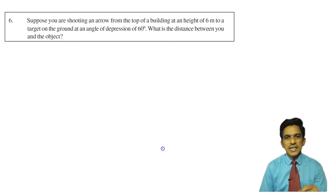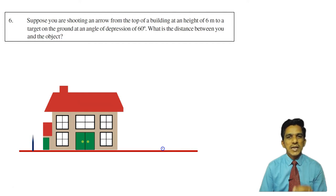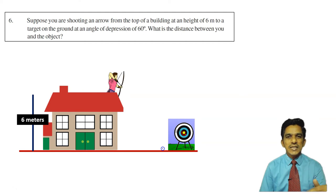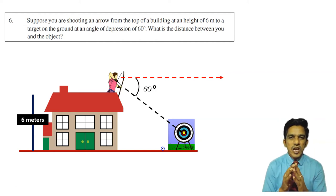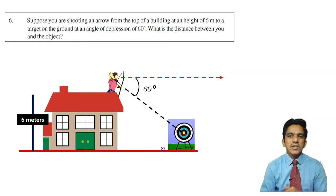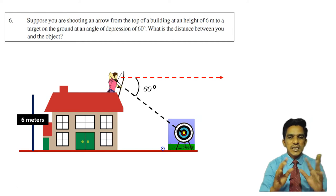Consider this is the building. Height of the building is 6 meters. This is the target and we are shooting the target from the top of the building. This is making an angle of 60 degrees with the horizontal line. Whenever you have an angle of depression, you have to draw a horizontal line from the observer. Draw a horizontal line and the line of sight makes an angle of 60 degrees.